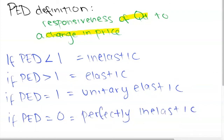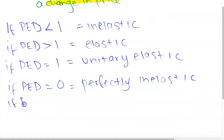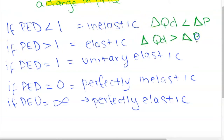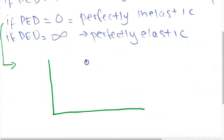With perfectly inelastic demand, the percentage change in quantity demanded is zero regardless of the change in price. We can think of a perfectly inelastic demand curve as applying to certain pharmaceutical drugs or products that people are addicted to. With perfectly elastic demand, where PED equals infinity, a change in price results in an infinitely large response in quantity demanded — something like potato farmers, who continue to grow whatever quantity they can regardless of market price.